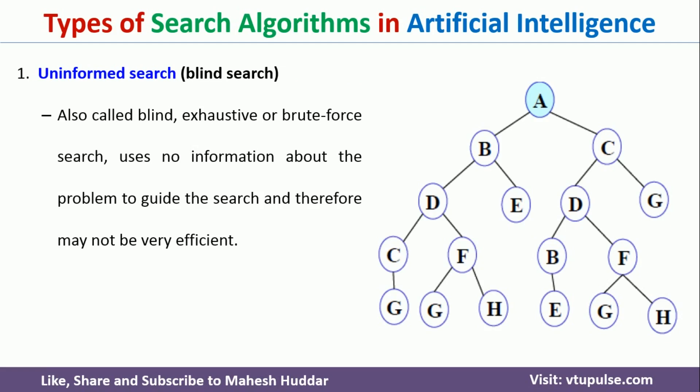Coming back to the different types of search algorithms in artificial intelligence. The first one is uninformed search, also called as blind search. The second one is called as informed search, also called as heuristic search algorithm. In uninformed search algorithm, given a state, if you have multiple number of paths, it will not select a path which has the least cost or the optimal path. It will go to each and every path and then try to reach the goal state.